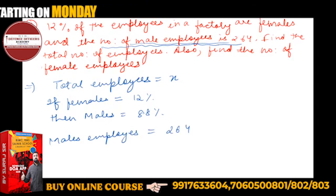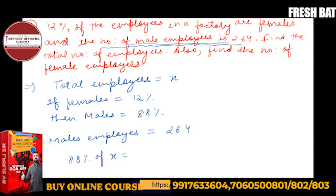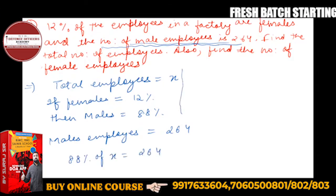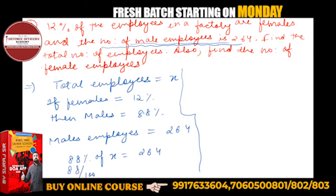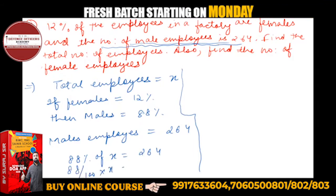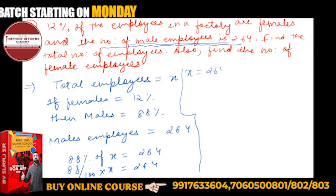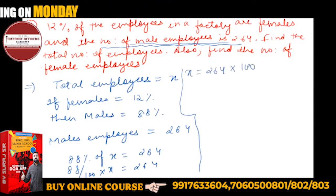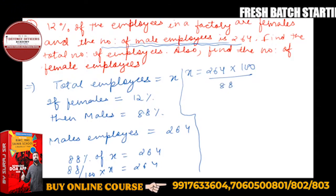So X is equal to 264. X will be equal to 264 into 100 upon 88. Now let's solve this.